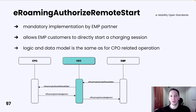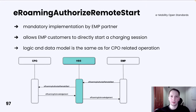E-Roaming Authorize Remote Start is a very important operation for EMP. It allows EMP customers to directly start a charging session with, for example, a mobile application. Implementation is mandatory for every EMP partner. The data model and logic are the same as for the CPO operation. EMP sends an E-Roaming Authorize Remote Start request, which must be processed by CPO, and then CPO must return an E-Roaming Acknowledgement, which is directly forwarded to EMP.